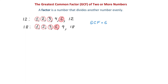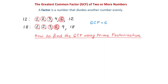This is one method of finding the greatest common factor, but another method is using prime factorization. Let's see how we can find the greatest common factor of 12 and 18 using prime factorization.